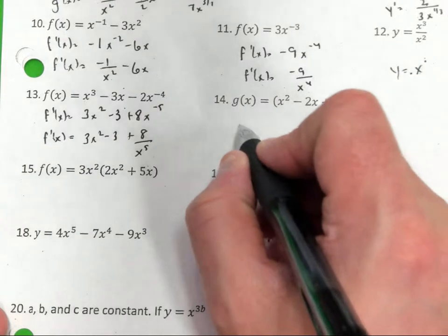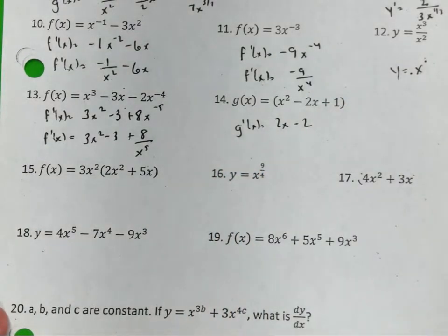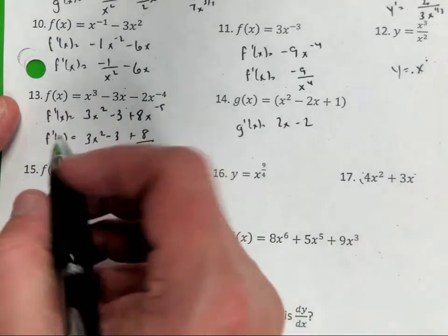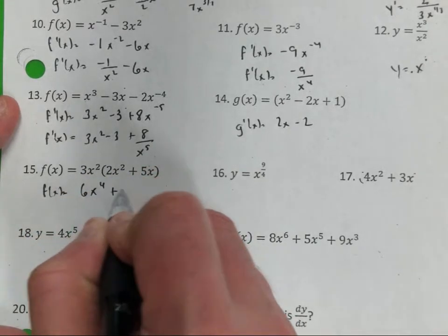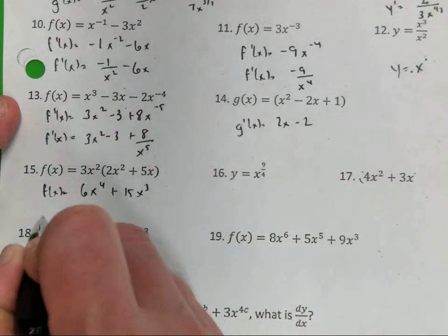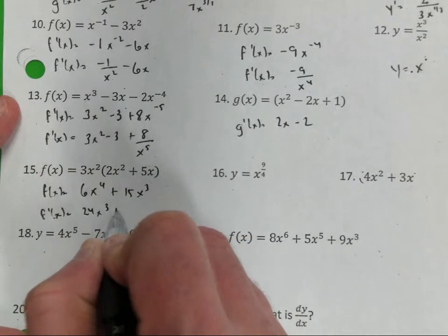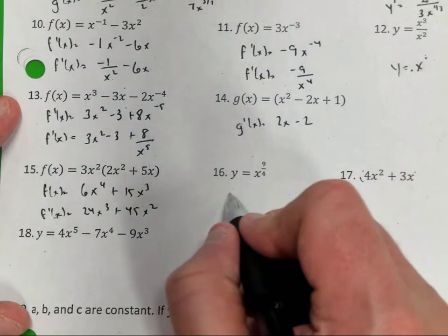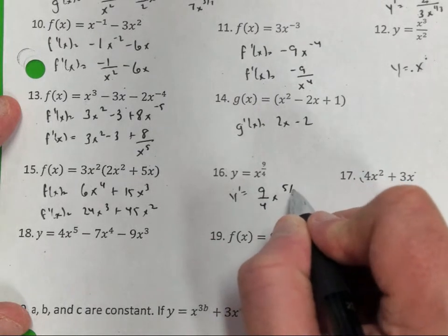Number 14, g prime of x equals 2x minus 2. On number 15, what do you think we need to do before we take the derivative? Distribute. f of x equals 6 — add those exponents. f prime of x equals 24x cubed plus 45x squared. Then y prime — bringing the 9 fourths down, subtract 1, that would be x to the 5 fourths.